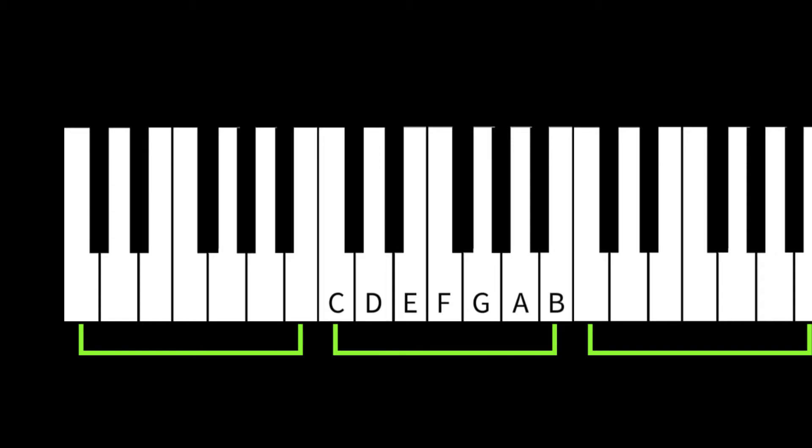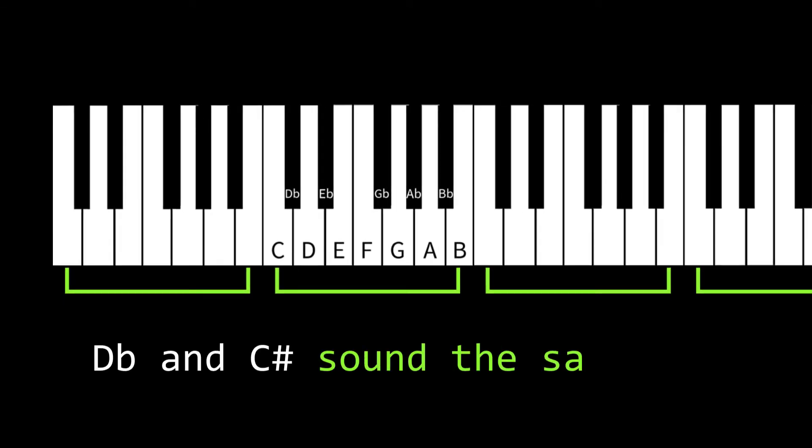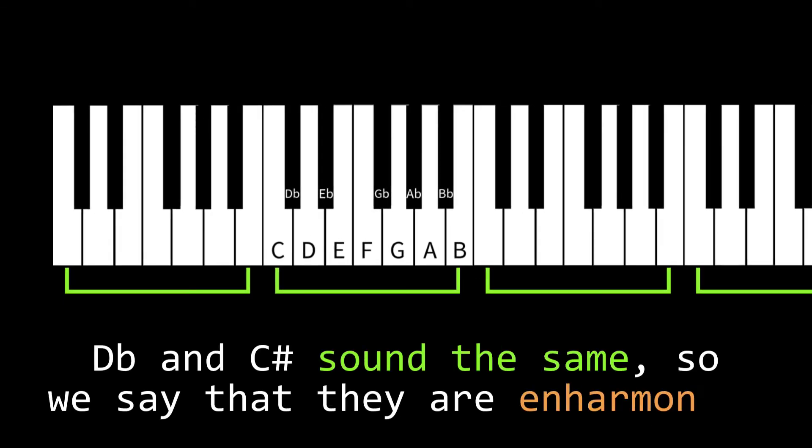Note that we skipped the black keys here, but for completeness' sake, let's add those back in. We've got a C-sharp, a D-sharp, an F-sharp, a G-sharp, and an A-sharp. Alternatively, we could call those black notes D-flat, E-flat, G-flat, A-flat, and B-flat. For what it's worth, when you have two pitches or chords that sound the same but have different names, we say that they are enharmonic. For instance, the note D-flat is enharmonic to the note C-sharp.